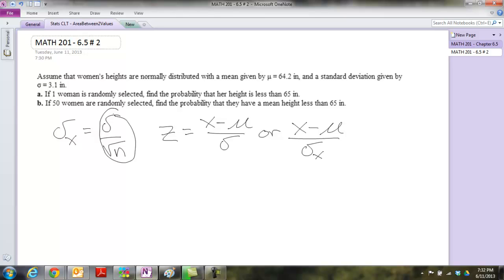Well, the truth of the matter is, you always divide by square root of n. It's just sometimes the square root of n equals 1, i.e. when you're dealing with this case. Hey, you choose one woman.